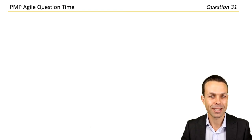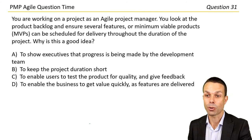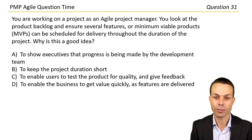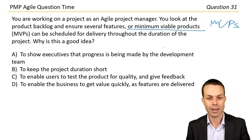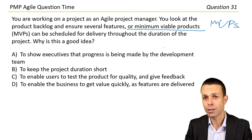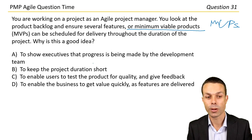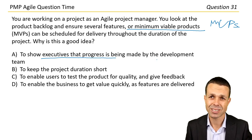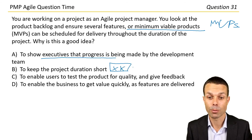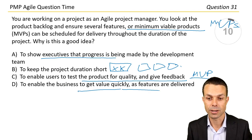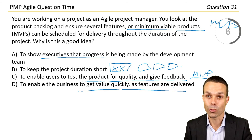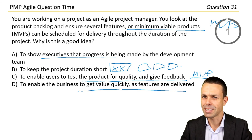You're working on an agile project and look at the product backlog, ensuring that several features or minimum viable products (MVPs) can be scheduled for delivery throughout the project duration. Why is that a good idea? Options include: showing executives progress, keeping the project short, enabling users to test for quality and give feedback, or enabling the business to get value quickly as features are delivered.